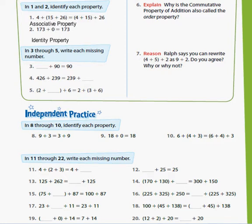We're talking about addition now. In one and two, identify each property. In one, it says four plus 15 plus 26 equals four plus 15 plus 26. So that's the associative property. It basically means that you can regroup the numbers and you're still going to have the same answer. They're both going to be equal.